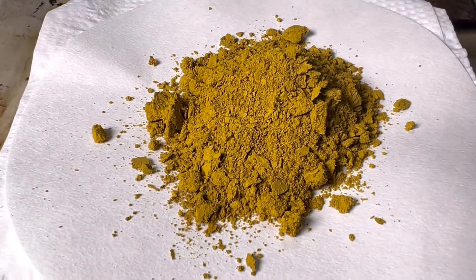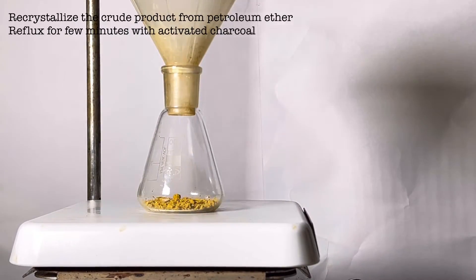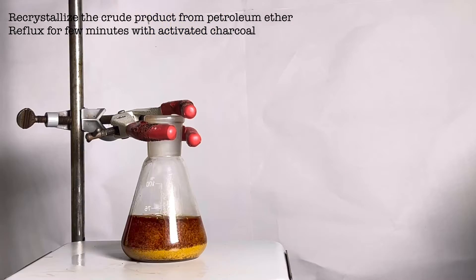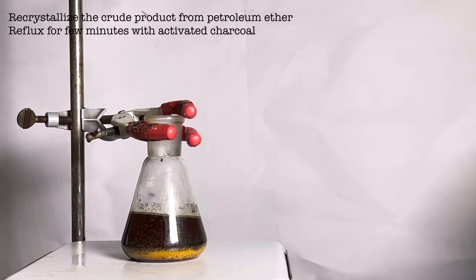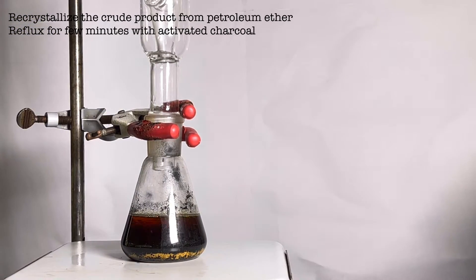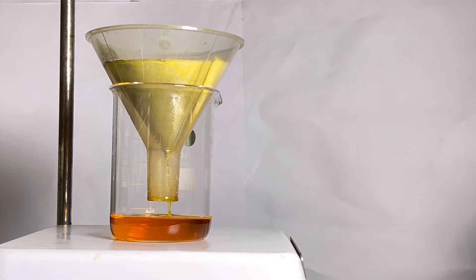Now it is time to recrystallize and purify the product. Petroleum ether is the solvent used in this case. The mixture was boiled with reflux for 15 minutes with activated charcoal to remove the colored impurities. After 15 minutes the solution was filtered using a normal gravity filtration method. The filtrate was placed in the fridge overnight.